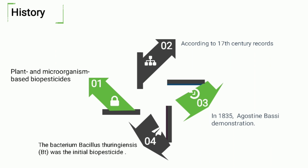In 1835, Agustin Bassi demonstrated that the white Muscardine fungus, Beauveria bassiana, could be used to cause an infectious disease in silkworms.